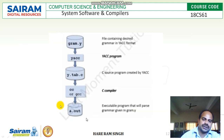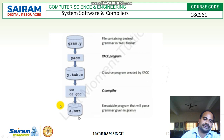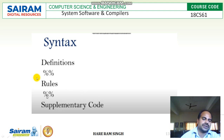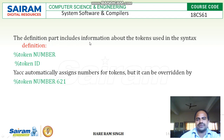With this example we can understand: we have a YACC program file, and the YACC compiler compiles it, creating y.tab.c, which is then compiled by the CC or GCC compiler to create a.out. YACC has three sections — definition section, rule section, and supplementary code — separated by two percentage signs (%%). The definition part includes information about the tokens used in the syntax.